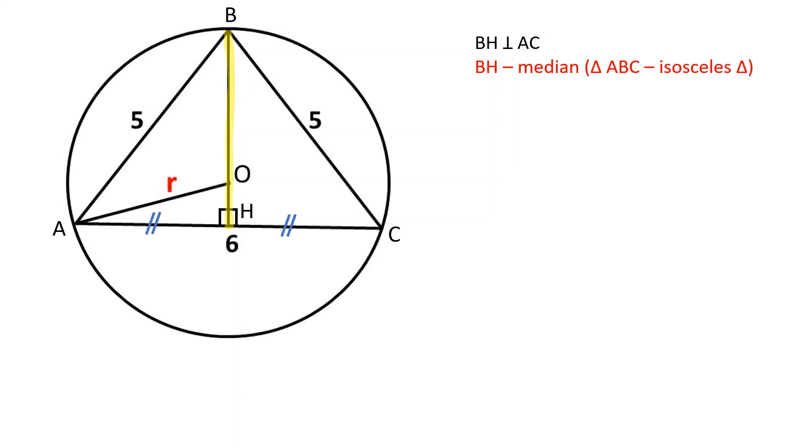BH is also a median because triangle ABC is an isosceles triangle. BH will intersect the center of the circle because the perpendicular bisectors of the sides intersect in the center of the circumscribed circle of a triangle. Since BH is a median,